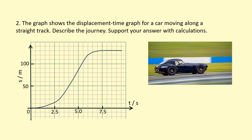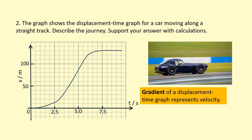Example 2: the graph shows a displacement-time graph for a car moving along a straight track. Describe the journey and support your answer with calculations. Keep in mind that the gradient of this displacement-time graph represents the velocity.